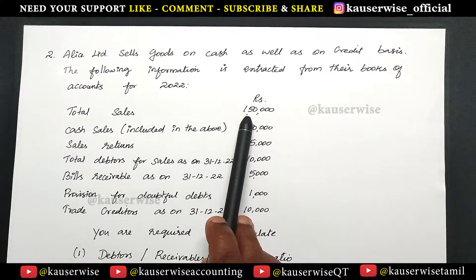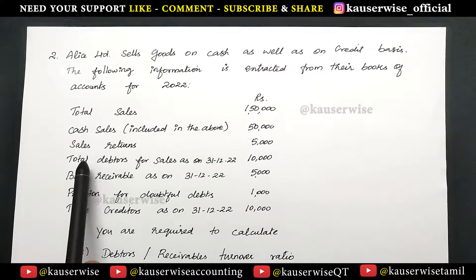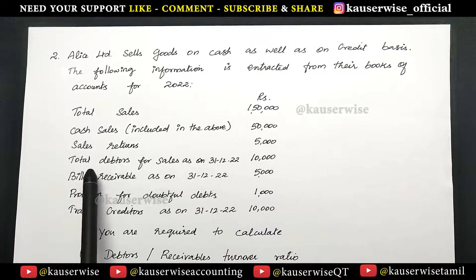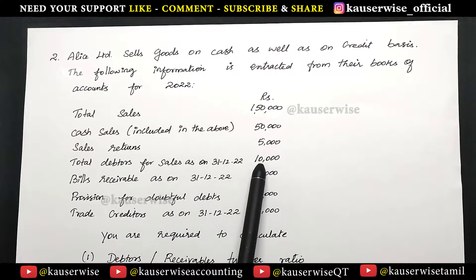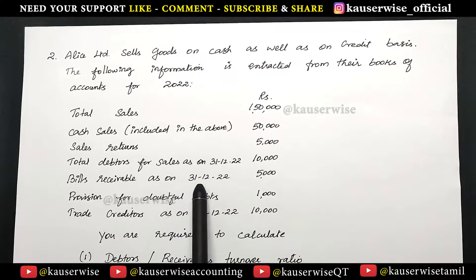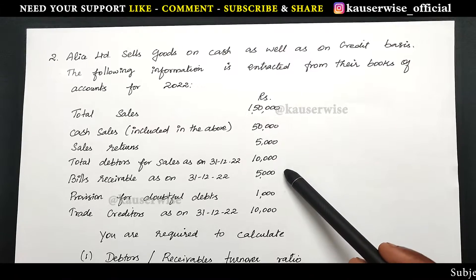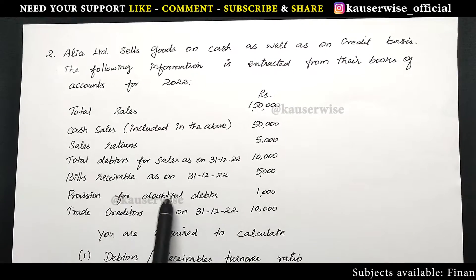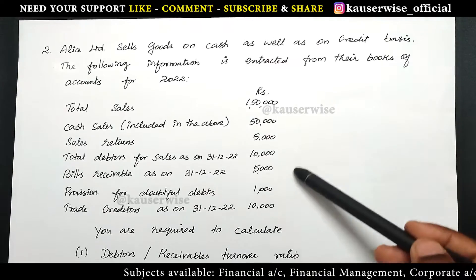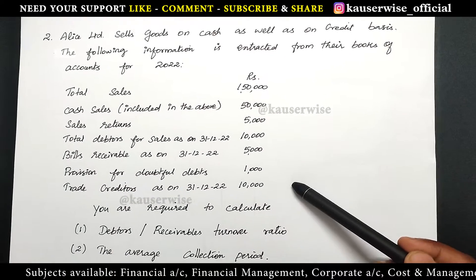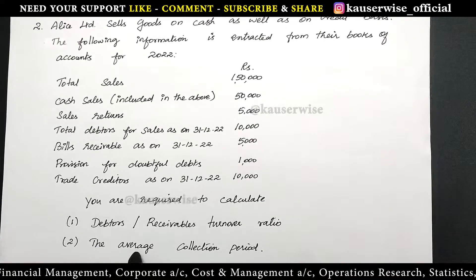Total sales consists of cash sales plus credit sales. This 50,000 is included in the total sales, and then sales returns: 5,000. Total debtors for sales as on 31st December 2022 — that is closing debtors — 10,000. Bills receivable as on 31st December: 5,000. This is also closing receivables — closing debtors and closing bills receivables. Provision for doubtful debts: 1,000. Trade creditors as on 31st December: 10,000. With this information they are asking you to calculate debtors or receivables turnover ratio and the average collection period.